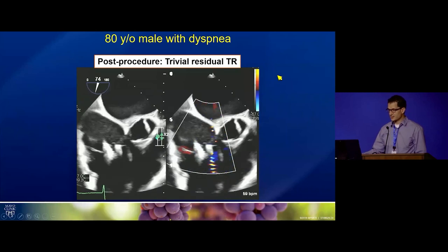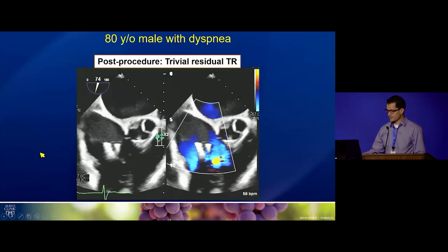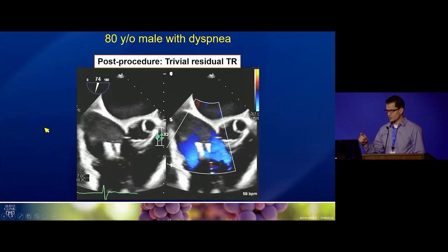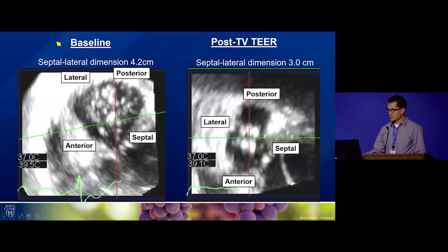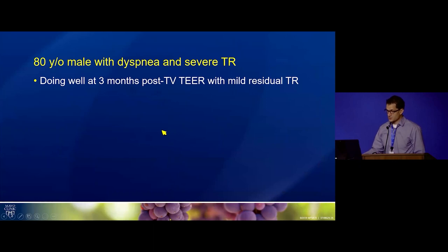This is a procedure we're still learning about with imaging and technical challenges remaining. The CLASP device has two paddles — the leaflets get pinned between the paddles and the clasp, then closed together, similar in concept to the MitraClip. In this early feasibility study of 34 patients, 85% had at least one grade of TR reduction, and about 52% had moderate or less TR. This patient was doing well at 3 months post-procedure with mild residual TR.